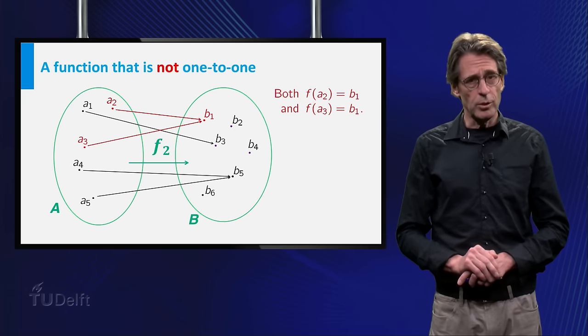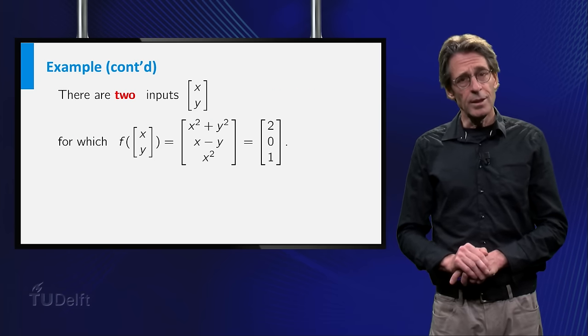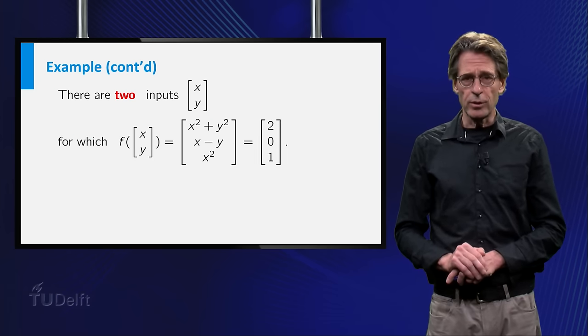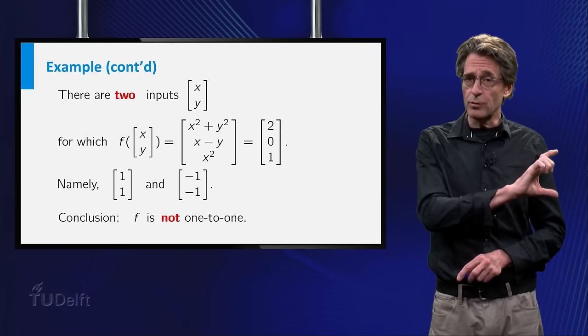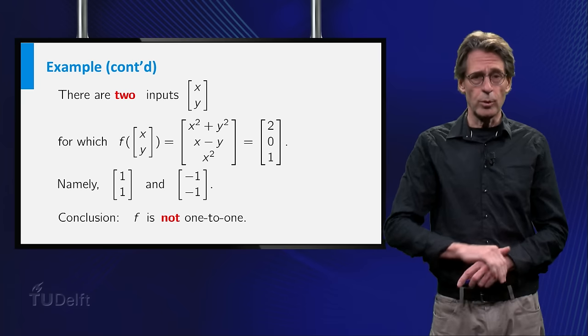For the vector function we considered, we have seen that two vectors are mapped to the vector 2, 0, 1. So this function is also not 1 to 1.